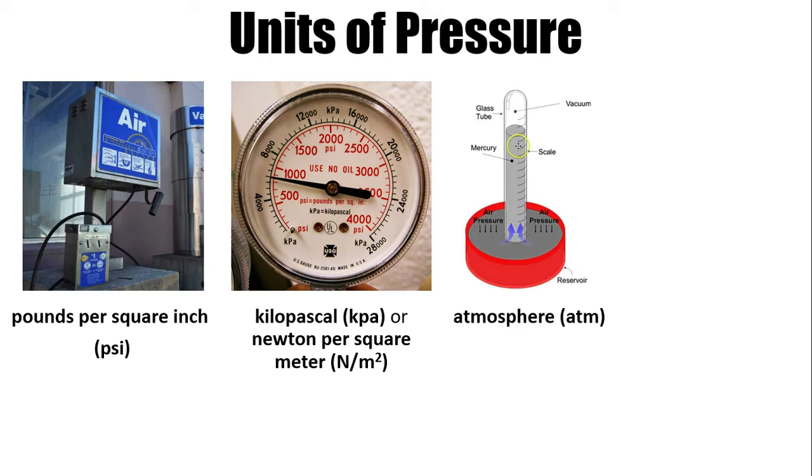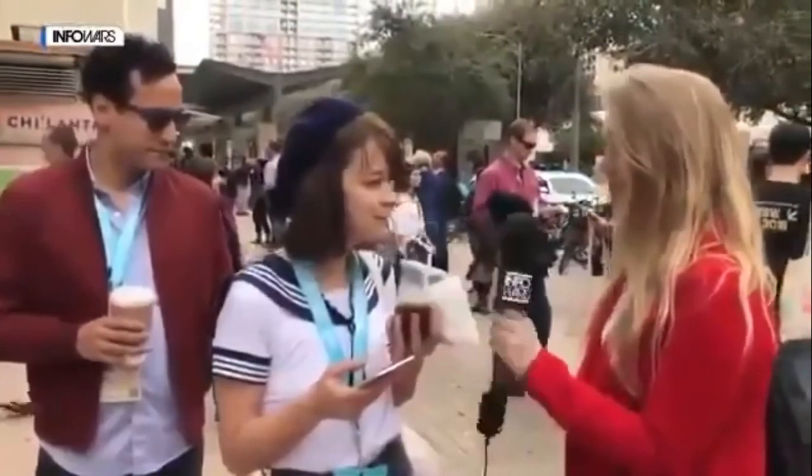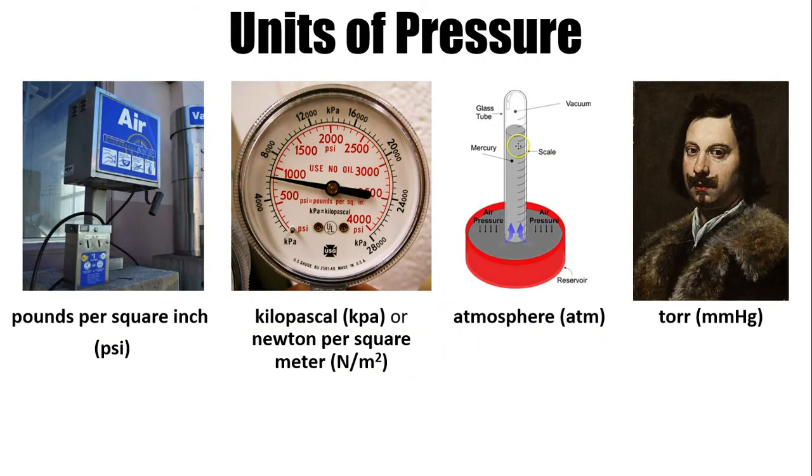In chemistry, a widely used unit for pressure is the atmosphere. But the IUPAC, or the International Union of Pure and Applied Chemistry, discourages its usage. But atmosphere is very common, it's widely used, so it's hard to deviate from that. And lastly, Tor, or mmHg, they're the same. It's an old but popular unit of pressure. Again, the IUPAC doesn't want to use this anymore. Now, let's talk about this guy, Evangelista Torricelli.